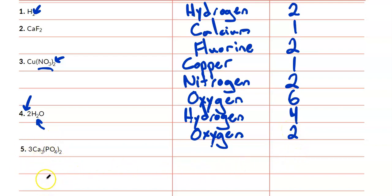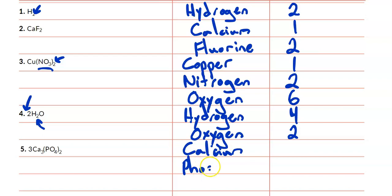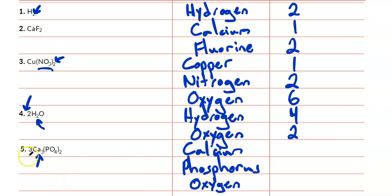Now we've got sort of everything in this last example: we've got subscripts, we have brackets, and we have coefficients out in front. We have calcium, phosphorus, and oxygen — three types of atoms. So if we start with calcium, that's outside of the brackets, so we have three calcium atoms in each compound, and we have three of those compounds. So three times three is nine. For phosphorus, that's in the bracket — we have one of them, then we multiply by the two outside of the bracket, so one times two is two, and then we multiply by that total of three compounds altogether. So one times two is two, times three is six. So we have six phosphorus atoms.